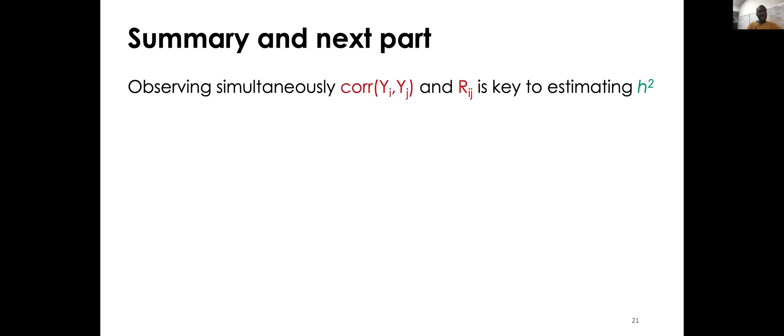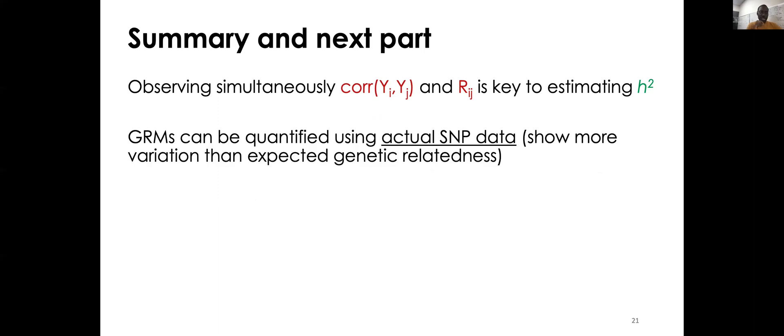Right. So just to summarize, observing simultaneously the correlation between relatives and a measure of genetic similarity is the key for estimating heritability. And all the methods are exactly using that relationship in different ways, but they are using that relationship to come up with ways to estimate heritability. Secondly, we've shown here that GRMs can be quantified using actual data and that they actually show more variation than expected under the pedigree relatedness. And this is actually good, it comes with a lot of nice statistical properties, in particular, in terms of reducing sampling variance of this estimator.